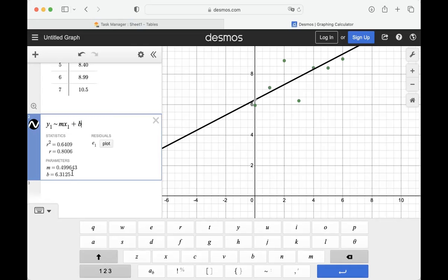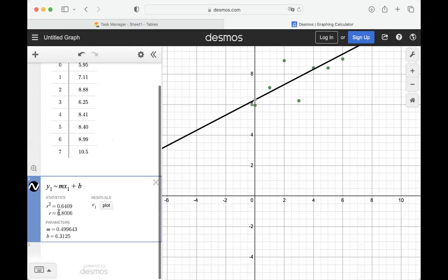Y equals... Let me get my arrow so I can show you what I'm pointing at. The slope in the line of best fit is 0.4996, so that could be 0.5, and the intercept is 6.312, which is right here.